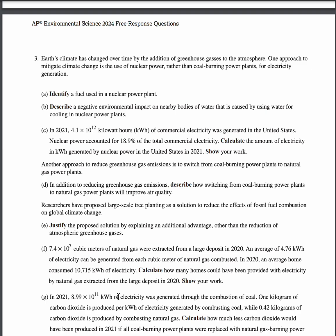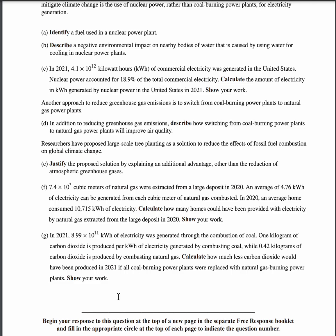For part F, the answer is 32,873 homes. To calculate this, you multiply 7.4 times 10 to the 7th by 4.76 kilowatt hours to get the total electricity, then divide by 10,715, which yields 32,873. For part G, the answer is 5.21 times 10 to the 11th CO2. To calculate this, first multiply 8.99 times 10 to the 11th by 0.42 to get the CO2 produced by combusting natural gas, then subtract that value from 8.99 times 10 to the 11th, which gives 5.21 times 10 to the 11th CO2.